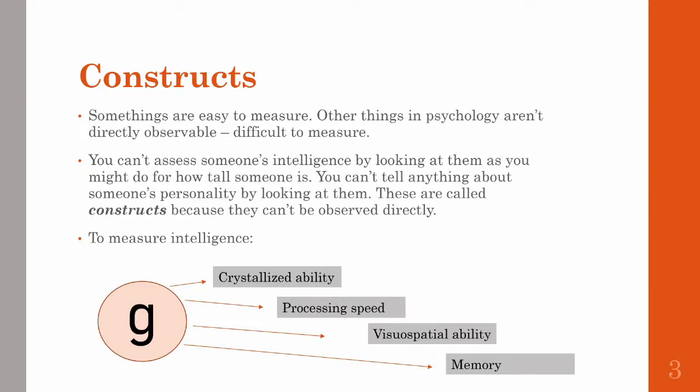This visualization shows on the left G, which is the general factor of intelligence. G is made up of several subdomains like crystallized ability, someone's processing speed, people's physiospatial ability, and memory. They can tell a slightly different picture, but each of those domains are all highly correlated.